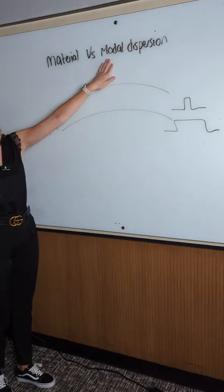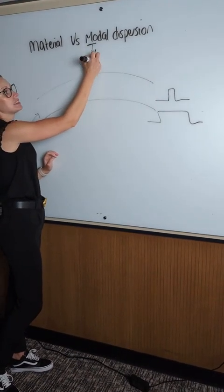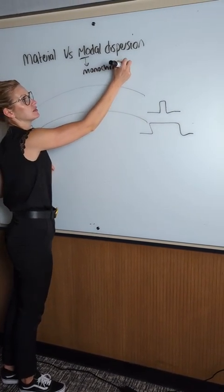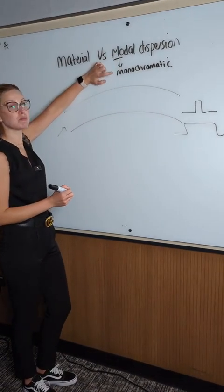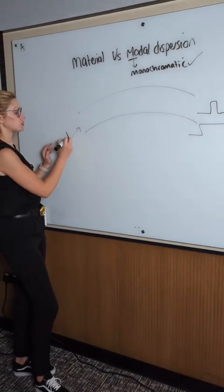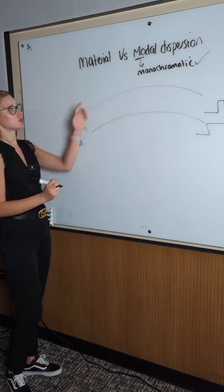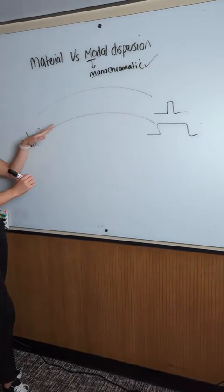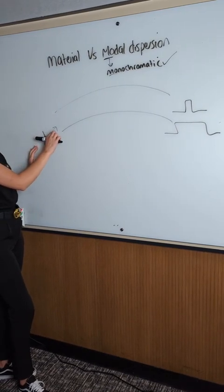So the first one is called modal dispersion. The way I remember modal dispersion is M-O — it's the same letters that start with monochromatic light. So modal dispersion is when we are already using monochromatic light, which means a single wavelength. So let's just say we're using red. Modal dispersion is when we are using monochromatic light, but the problem is because the light is going in at different angles.